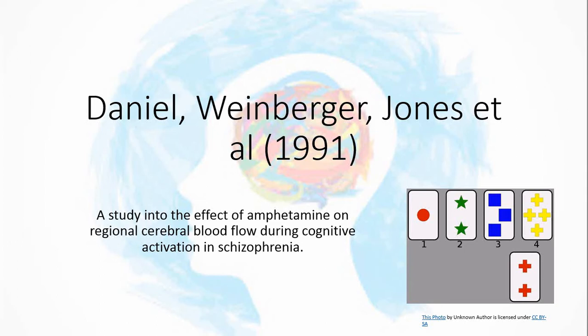So this is Daniel Weinberger et al., 1991 - a fairly recent study into the effect of amphetamines on regional cerebral blood flow during cognitive activation in schizophrenia. In a nutshell, we're looking at the effect amphetamine drugs have on blood flow in the brain when we're asking schizophrenic patients to do thinking tasks.